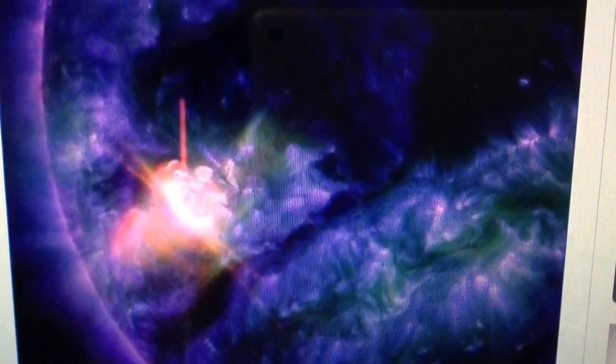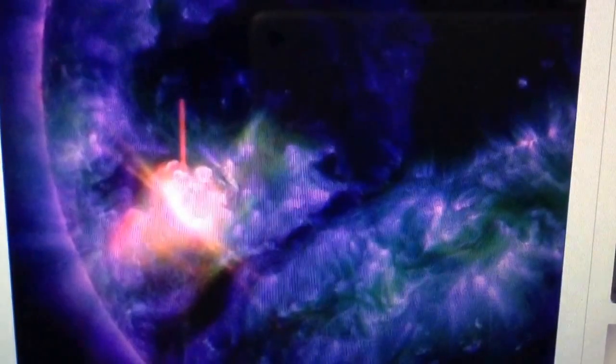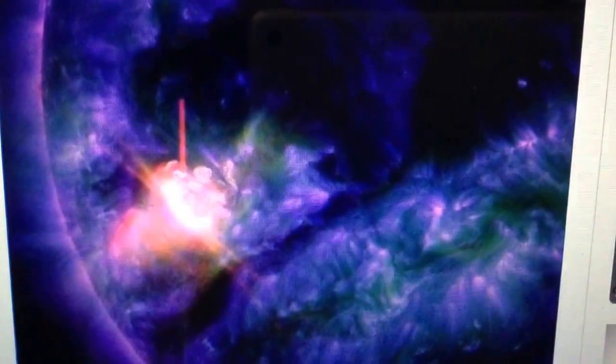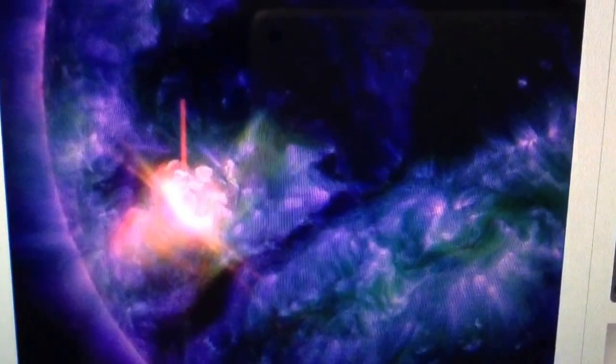Many times we see major quakes happen after large solar flares, especially if they're Earth-facing. You know, you could have an X-Class 5, which is huge, but if it's not facing Earth, it won't have near the impact as an M5 facing Earth.